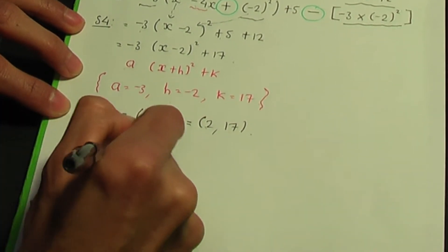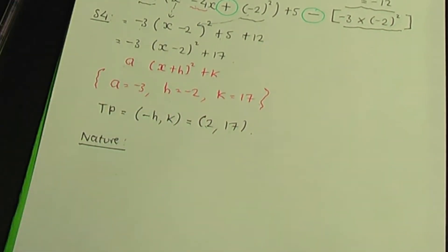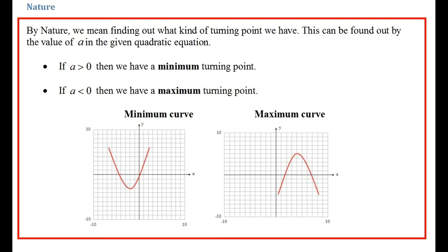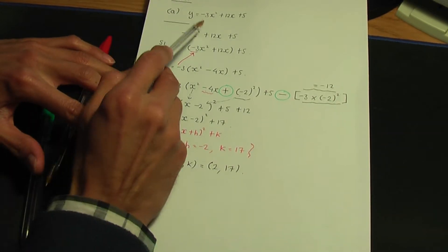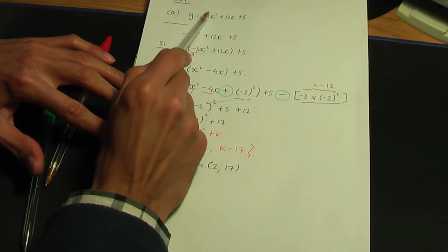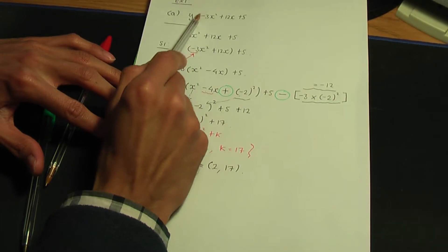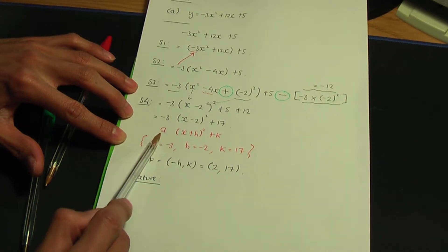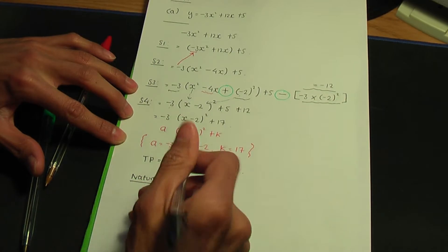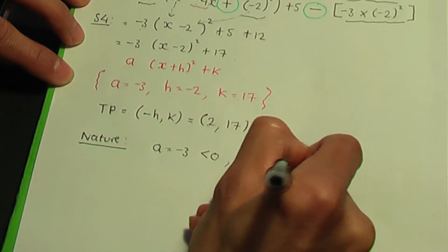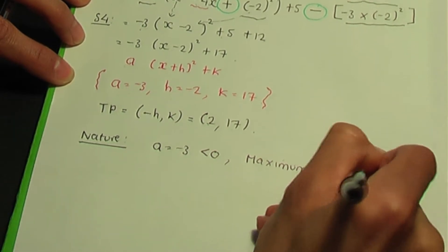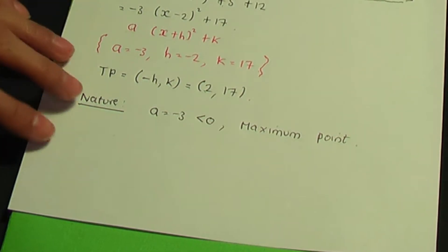Now let's work out the nature of this turning point. For nature: if a is greater than 0, it's a minimum turning point; if a is less than 0, it's a maximum turning point. Our a value is minus 3. Minus 3 is less than 0, so we have a maximum turning point.